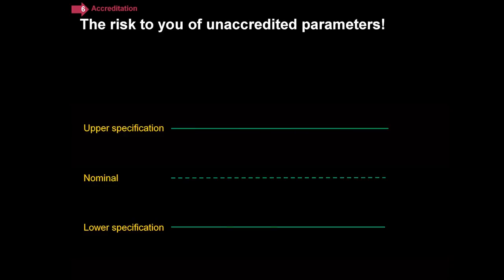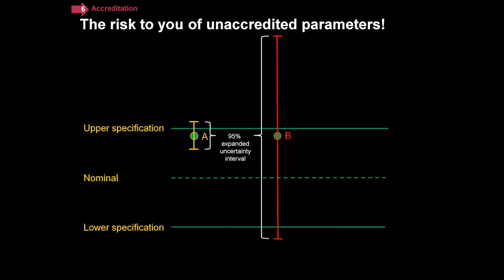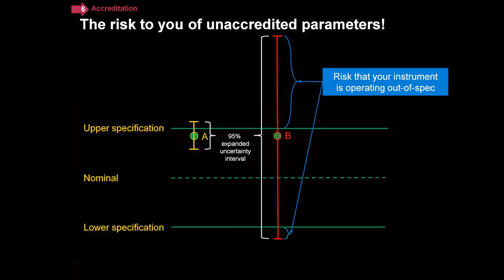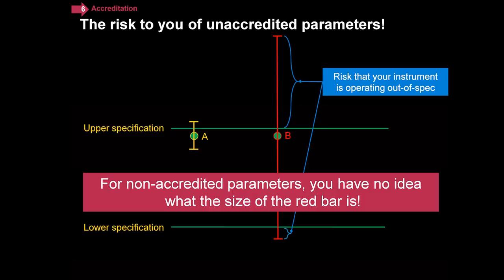I want to show you why I make the claim that this is very important. Let's look at two measurements — calibration lab A and calibration lab B. There are two different measurement uncertainties associated with each. The 95% expanded uncertainty is quite a bit smaller — that's the interval over which the true measurement could be. The true measurement in lab B could be largely outside the upper specification, and there's even a region outside the lower specification. If you're getting a calibration from a lab doing non-accredited parameters, you have no idea how large that red bar is.